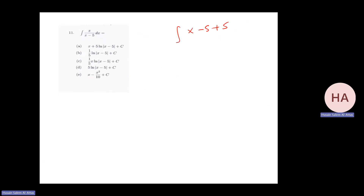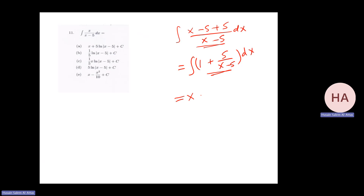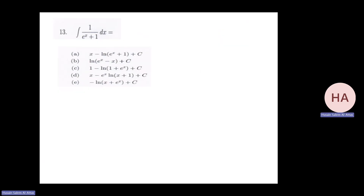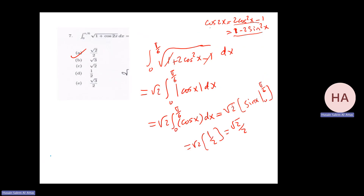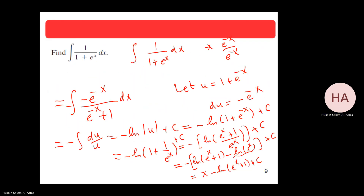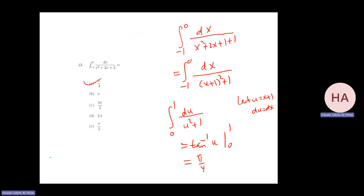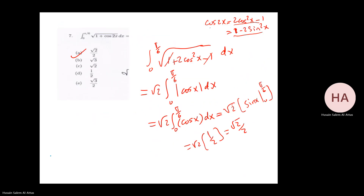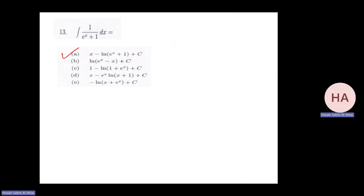For x over x minus five, you can do long division or the trick of writing x as (x minus five) plus five, giving one plus five over (x minus five). Integrating gives x plus five ln|x minus 5| plus c. For one over ax plus one, same idea — we did this before. The answer is x minus one over a times ln|ax plus 1| plus c.